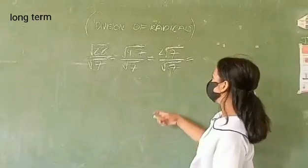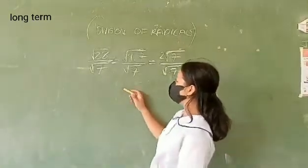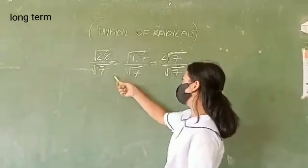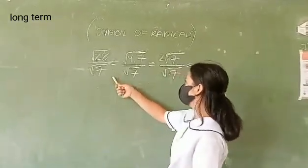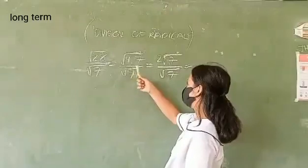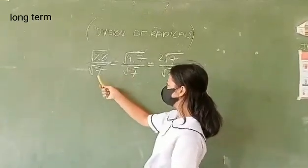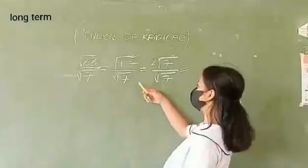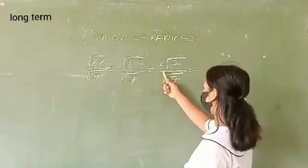How about division of radicals? Square root of 28 over square root of 7. We find the factors of 28, which is 4 times 7. Then the square root of 7 cancels out. We find the square root of 4, which is 2.